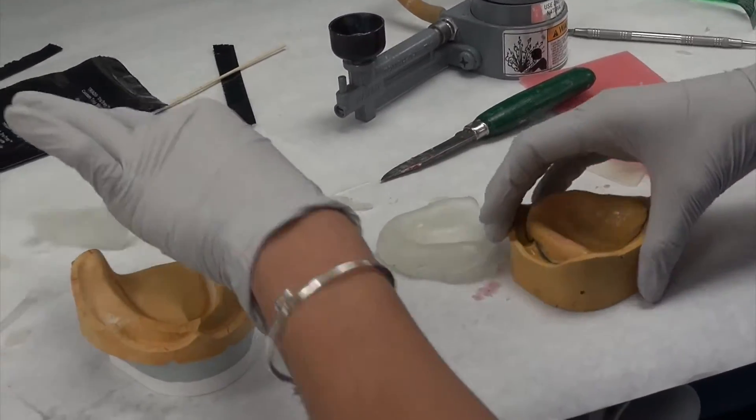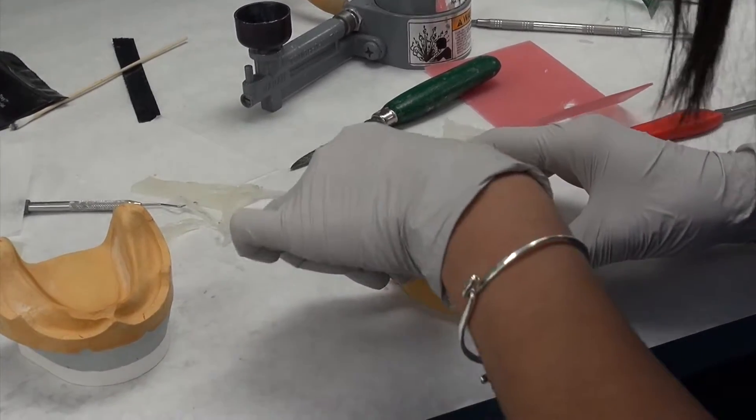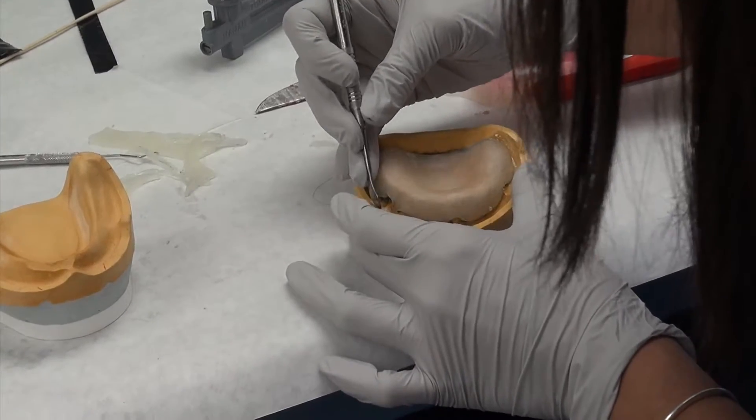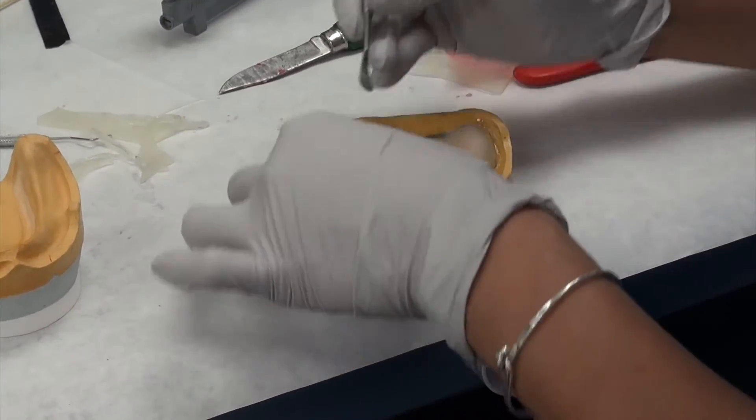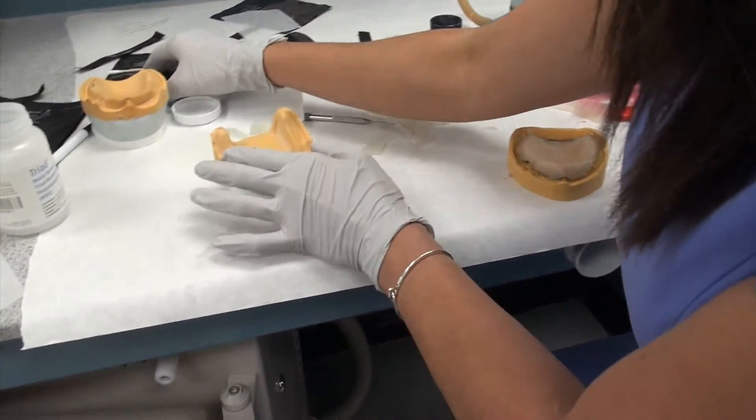But yours won't come off that easily. Now once you have it off, you just want to put it right back on immediately. One of the ways that these can rock is if you play with it too much or you leave it off of the cast while it's still warm.